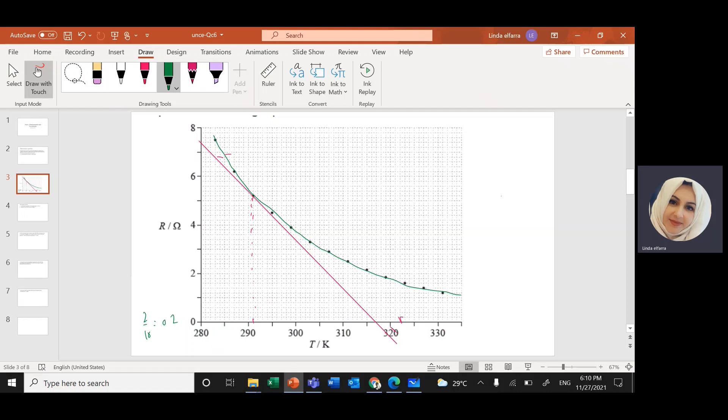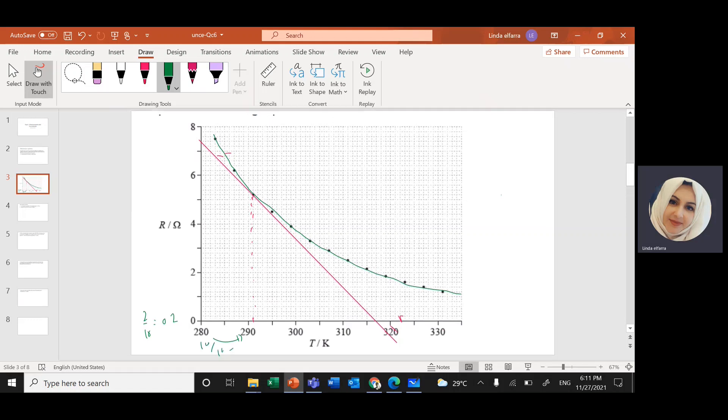Here in the horizontal axis, I have 280 minus 290 divided by 10. So each one will give me 10 divided by 10, it will give me 1. So each square will give me 1. So here I have this point here on the x-axis is 315, 317. And this point here, this one here in the y-axis,